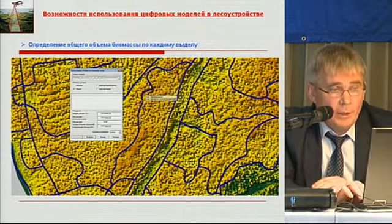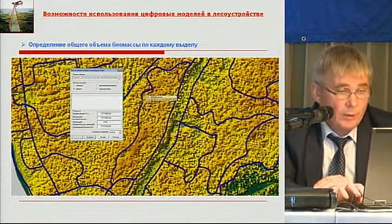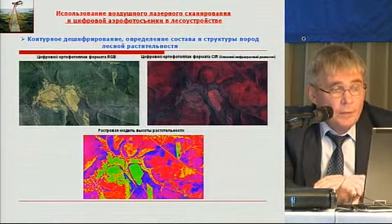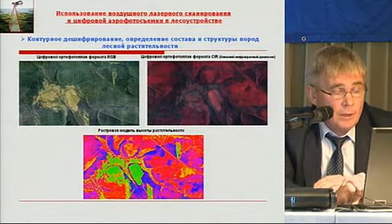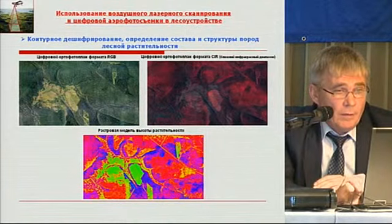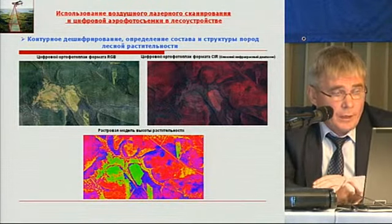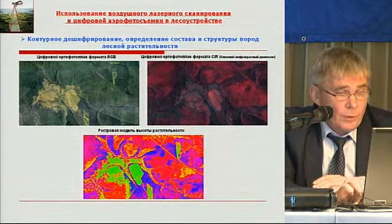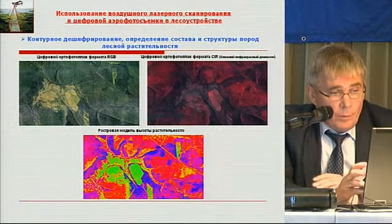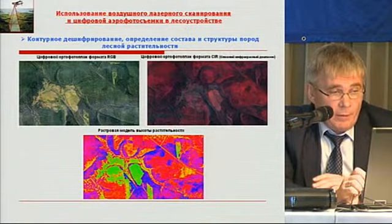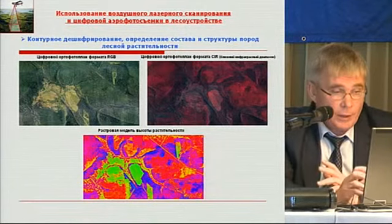Empirically, we can calculate other indicators based on biomass. For interpretation, we can use composite materials — for example, an RGB orthophoto plan, near-infrared, and composite materials obtained when RGB and infrared bands are combined. You can also add a digital elevation model or relief model to it.